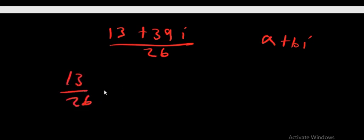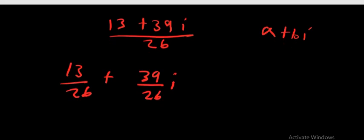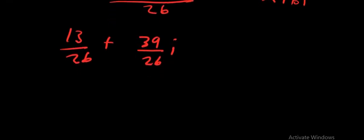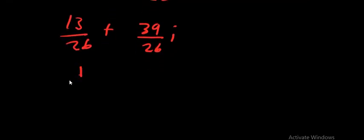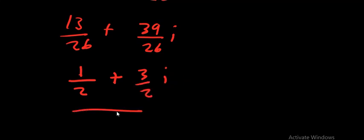Reducing both fractions to their lowest terms: 13/26 = 1/2 and 39/26 = 3/2. So the final answer is 1/2 + 3/2 · i. We have successfully expressed the expression in the form a + bi.